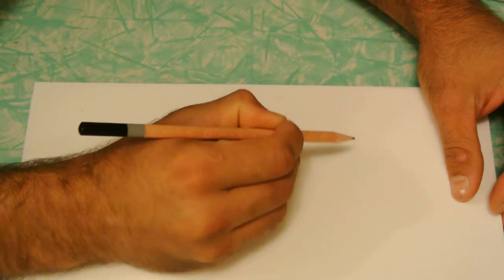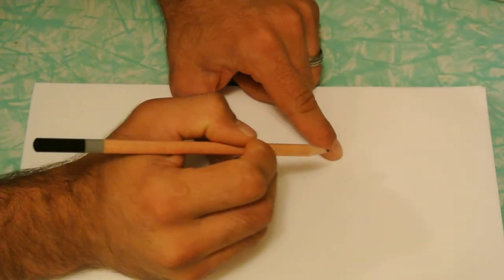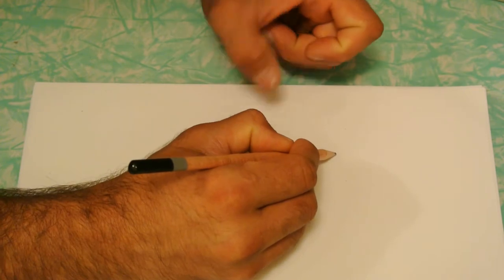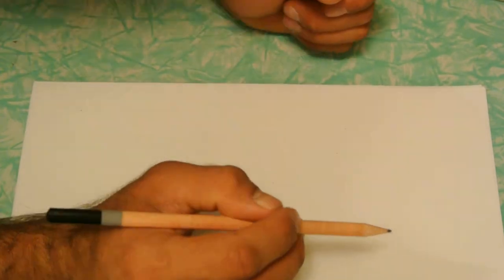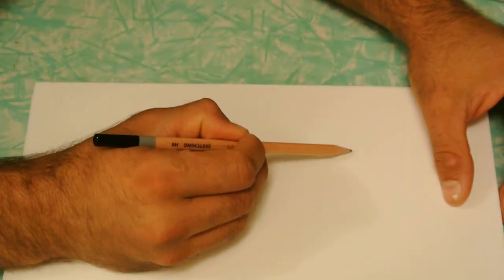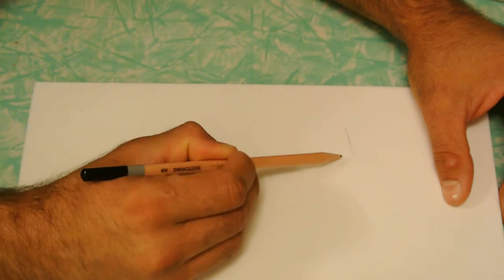Start with a dot, then another dot, find your middle, draw a dot above, and then draw a dot below. After that, you're going to connect the dots, just like you're making a cube.